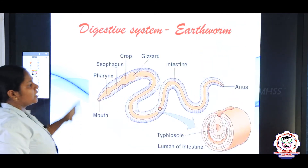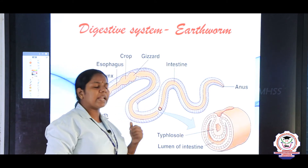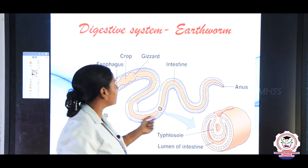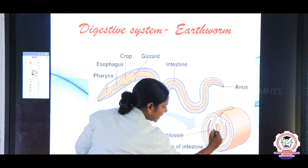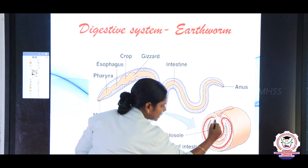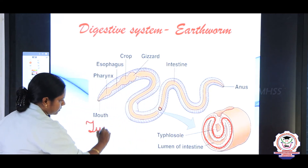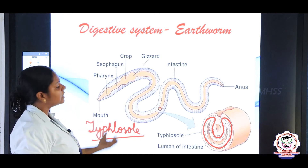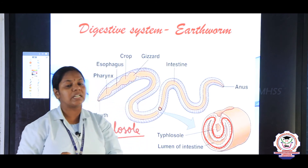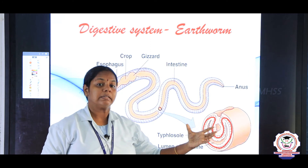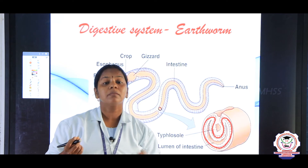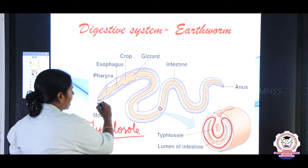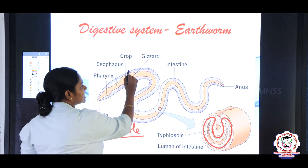The intestine of the earthworm is folded, just like our intestine, to increase the surface area of absorption. This folding in the earthworm's intestine is called typhlosole. The intestine absorbs all the nutrients, and the waste particles are ejected out as worm castings. We can identify the earthworm by the presence of worm castings — the ejected soil particles.